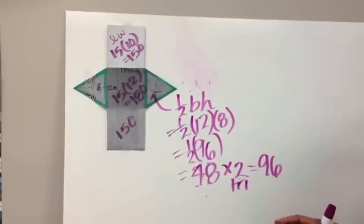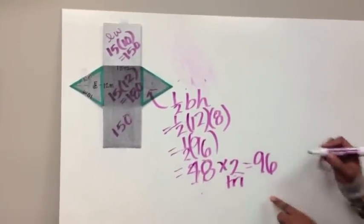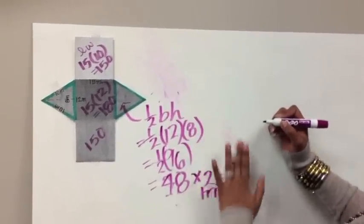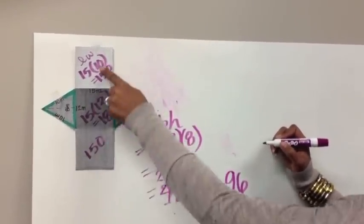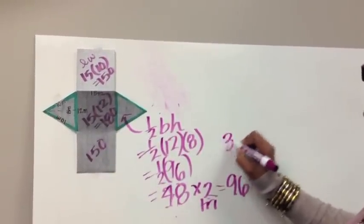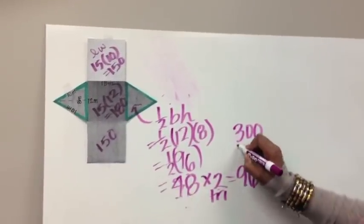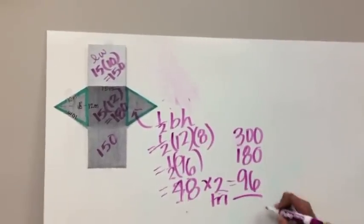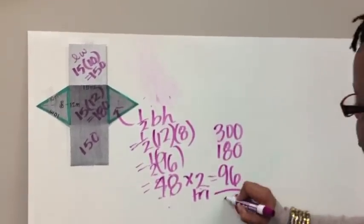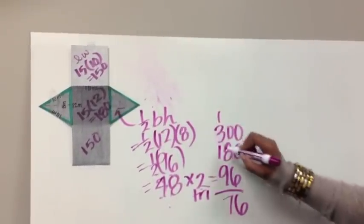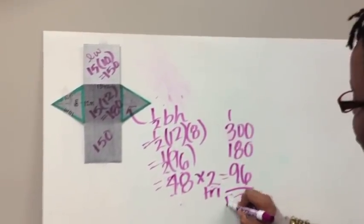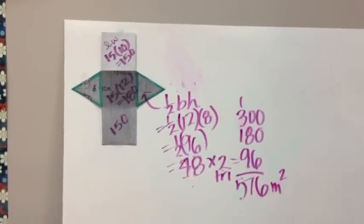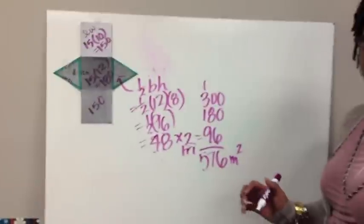Now I need to add all of those areas together to get my total surface area. The two rectangles of 150 give 300, plus the face of 180, plus the two triangles totaling 96. Adding those together gives a total surface area of 576 meters squared.